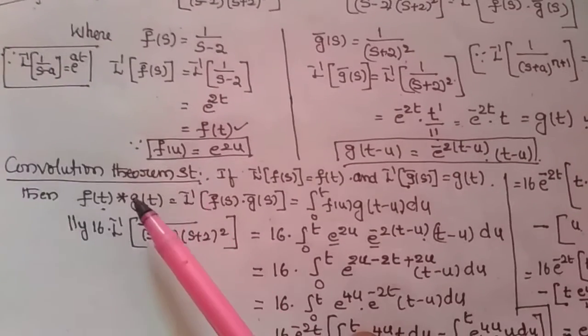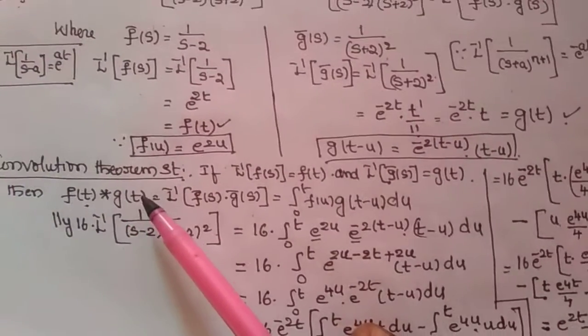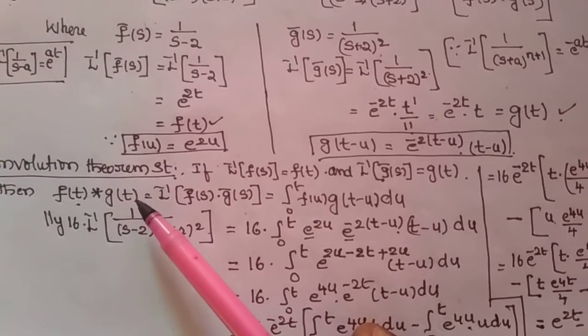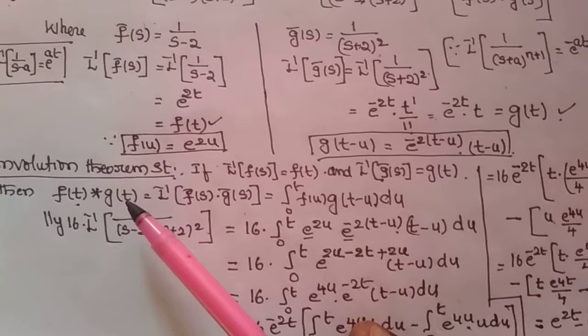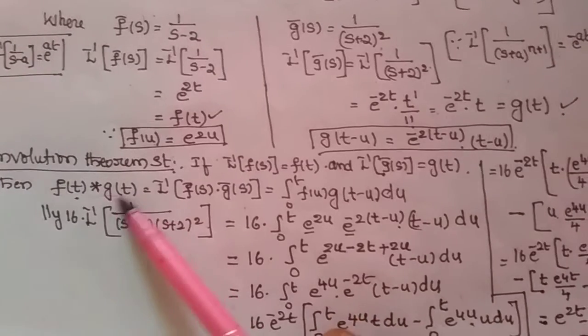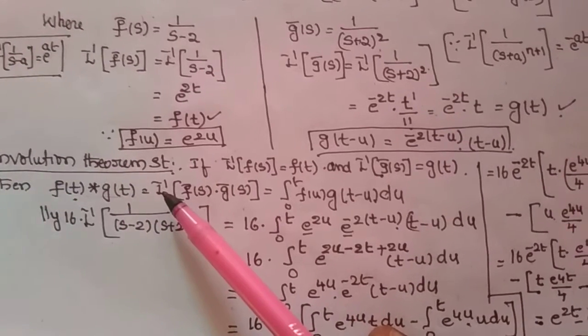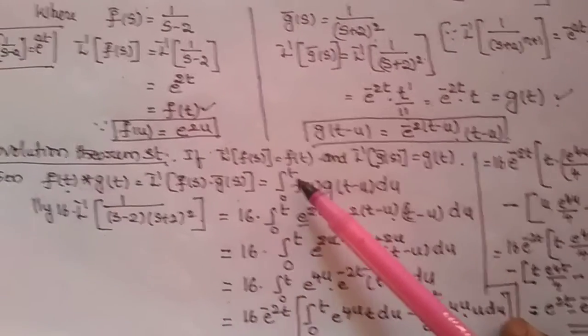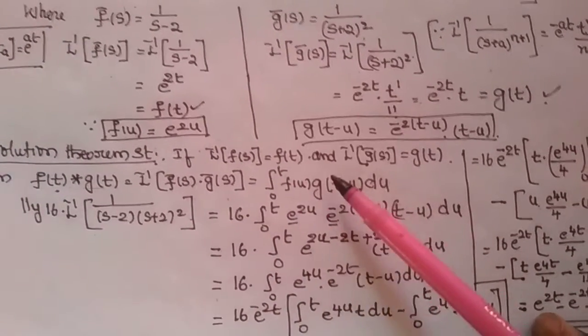Then coming to the convolution theorem statement, if L inverse of f bar of s is equal to f of t and L inverse of g bar of s is equal to g of t, then f of t star g of t, this is called convolution product, is equal to L inverse of f bar of s into g bar of s is equal to integral 0 to t, f of u g of t minus u du.